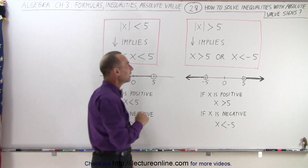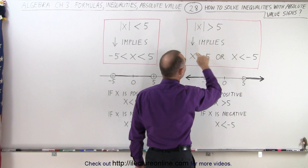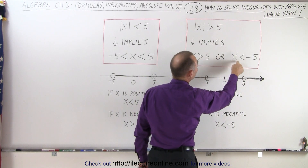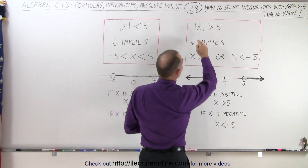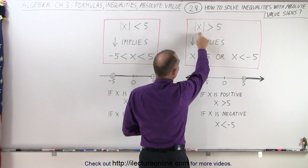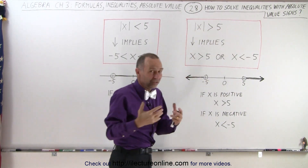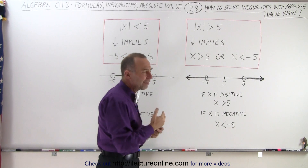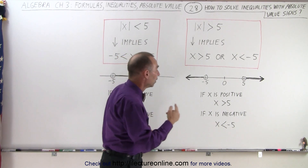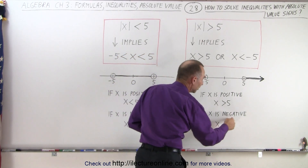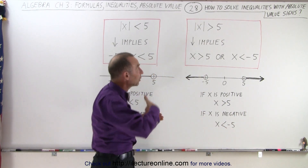On the other hand, when you have a situation where the absolute value of x is greater than 5, that implies that x must be greater than 5, or x must be smaller than negative 5. If x is a positive number, then the absolute value of a positive number is still positive, so x must be greater than 5, otherwise it doesn't satisfy that inequality. But if x is a negative value, then x must be less than negative 5 because when you take the absolute value of it, it will be greater than 5.